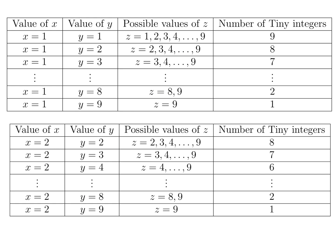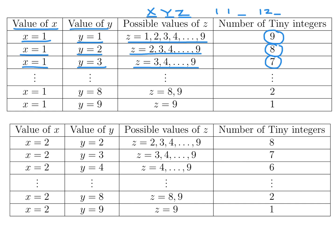For numbers of the form XYZ where all digits are non-zero, let's start with X=1. If Y=1, then Z can be anywhere from 1 to 9 — all 9 qualify as tiny. Keeping X=1, moving Y up to 2: as long as Z is greater than or equal to 2, we get a tiny number, giving 8 choices. Then with Y=3, Z has to be at least 3, giving 7. So this is a predictable pattern. Adding 1+2+...+9 = 45.